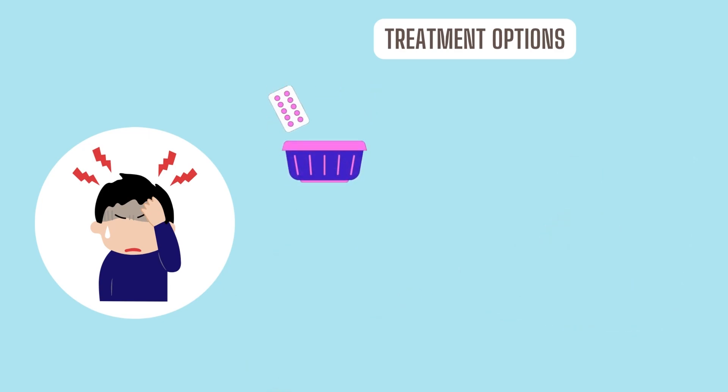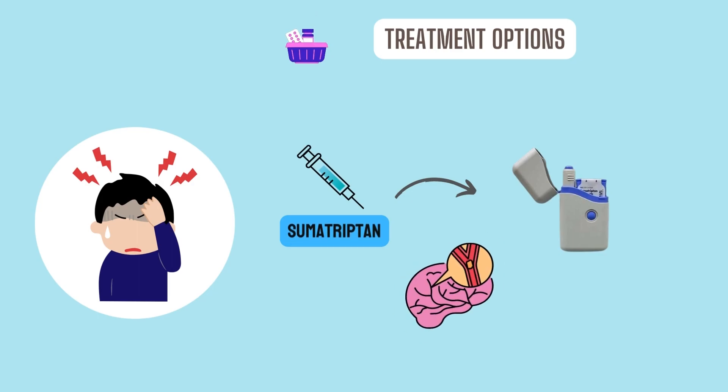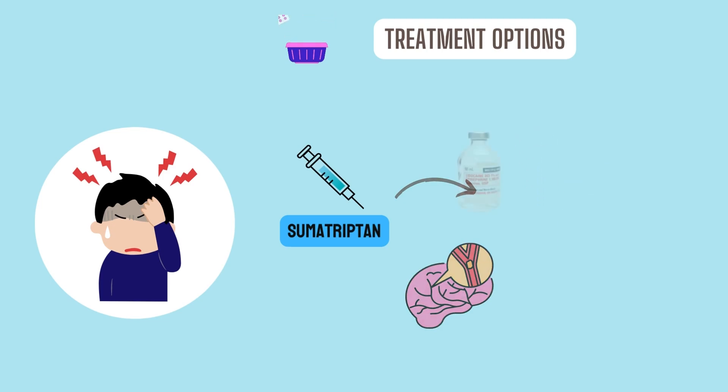Medication is the most common treatment for cluster headaches. A drug called sumatriptan may be given as an injection. This drug causes blood vessels in the brain to narrow, which helps relieve the pain.